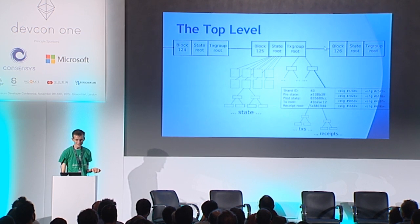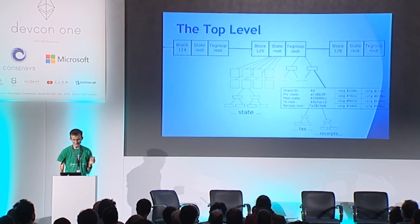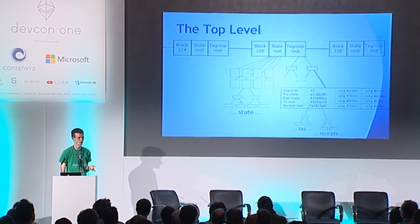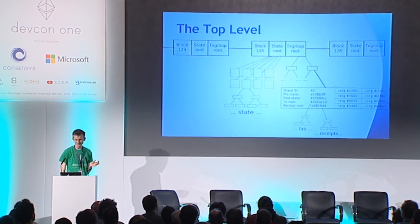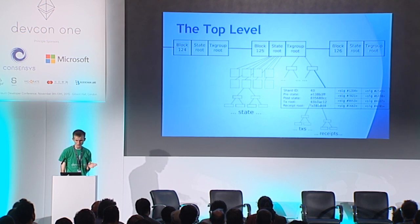You still have a blockchain at the top — the header chain — containing a state root, a hash of the previous block, and all the usual metadata. It contains two primary roots: a state root representing the entire state (with shard roots, each pointing to its own tree) and a transaction group root. Instead of a Merkle tree of transactions, you have a Merkle tree of transaction groups, and each transaction group contains pre-state and post-state of the shard, a transaction root, and a receipt root.